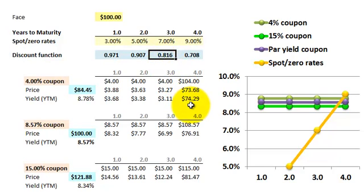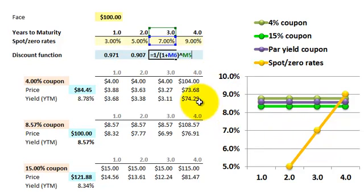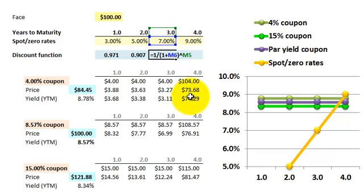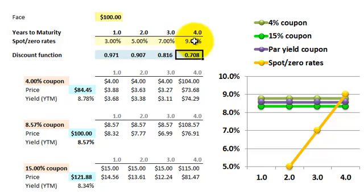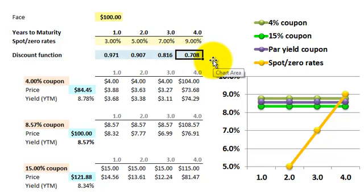For example, the discount factor at three years under annual compounding — I'm using annual compounding as a simplification to avoid confusion with compound frequency — is just one divided by one plus the three-year spot rate of 7%. So 1.07 raised to the third power gives 0.816. That's the three-year discount factor. The four-year discount factor works the same way. The elegance of the discount function is that you can use those values directly as multipliers, since they already contain the compounding frequency information.